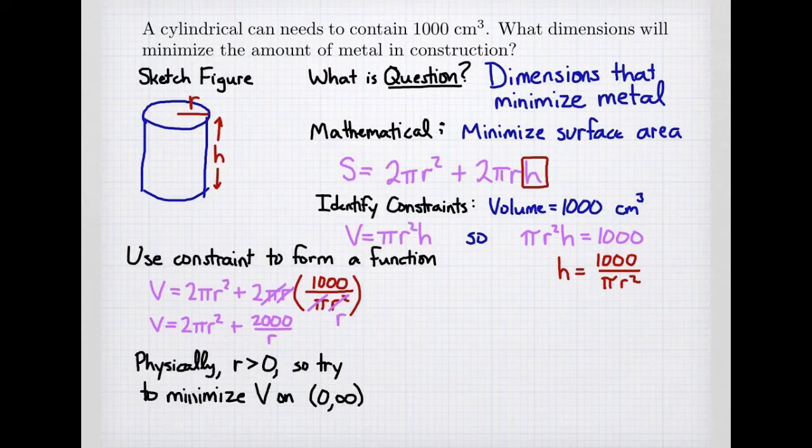How do we minimize the function? We minimize the function by finding critical points. So we calculate our derivative, v prime. We get 2π times 2r, so that's 4πr.